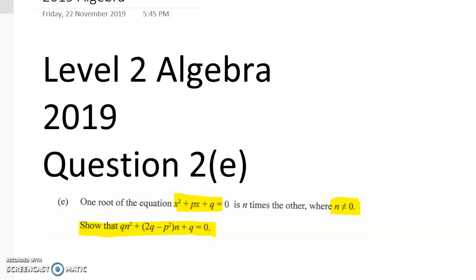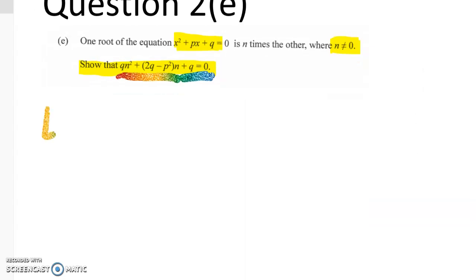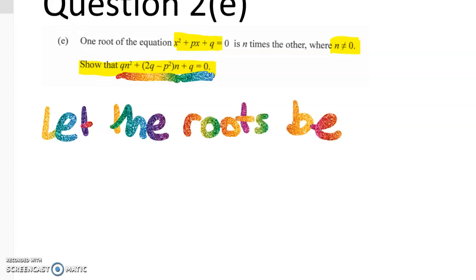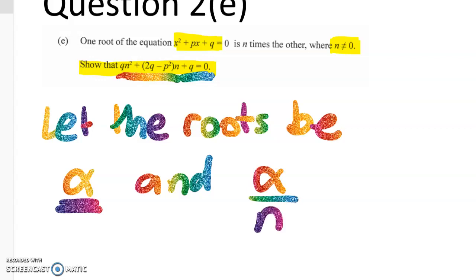Sometimes in a show that question you start working with the left hand side and you work towards the other. But that's not really the way to approach this one. Let's start by what do we know if one root of the equation is n times the other. So we're going to let the roots be alpha, and we're going to make this the big one, and we're going to make the other one alpha divided by n.